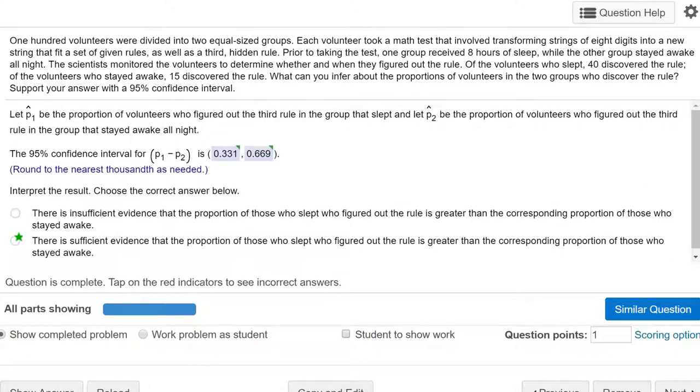Hi, this is Dr. Don. I have a problem out of chapter 8 section 4 about constructing a confidence interval for the difference between two proportions.